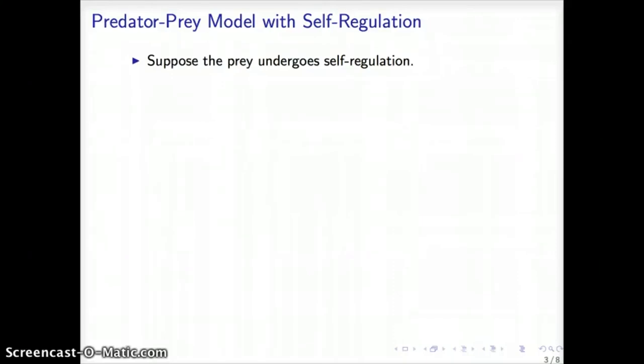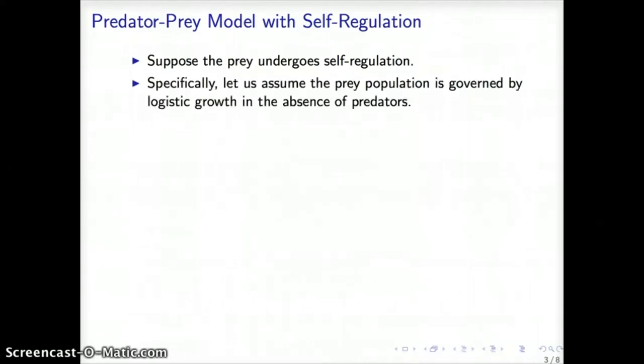We will take into consideration mechanisms of self-regulation in the population of prey. This may be due to resources that one species, in this case the prey, needs to take into account for sustainability. It could be space, it could be food, it could be exposure to sunlight, really a number of things. A known model to take into account basic elements for self-regulation is known as the logistic model, specifically logistic growth.